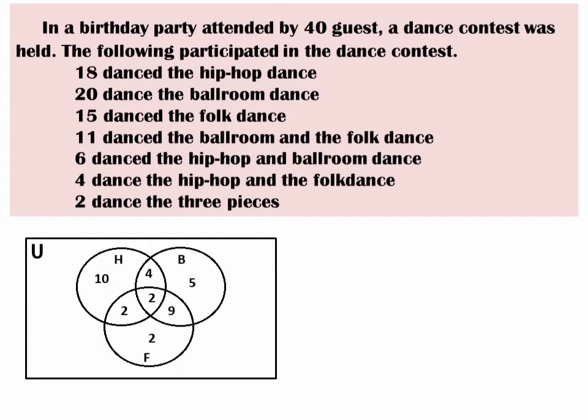Are we done with our Venn diagram? Not yet. We must check if the universal set is correct — there are 40 guests total. Adding all elements inside the circles gives only 34 guests. So there are 6 guests who did not dance any of the three. We write 6 inside the rectangle but outside the circles.